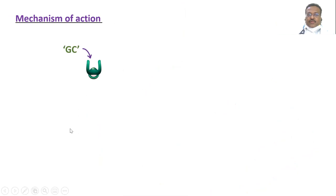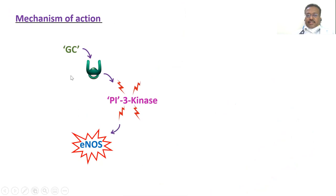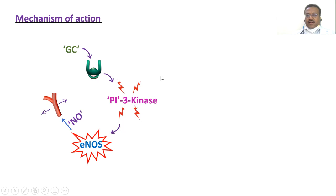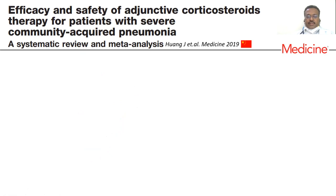How do steroids act? Glucocorticoids bind to glucocorticoid receptors, causing activation of phosphoinositol-3 kinase, which leads to stimulation of endogenous nitric oxide synthase, producing nitric oxide that causes vasodilation. This gives steroids a profound anti-inflammatory effect as well as an anti-vasodilatory effect — which is how steroids are found to be helpful in community-acquired pneumonia.